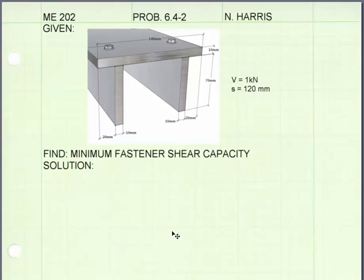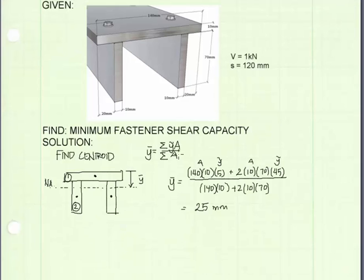To get values for Q and moment of inertia, I need to know where the neutral axis is on this cross-section, so I'm going to find that first. I use this formula to find the vertical distance to the centroid. I've chosen for my datum the top of the member, so we will calculate y-bar as the distance from the top down to the centroid of the cross-section, and the neutral axis is a horizontal line that passes through it.